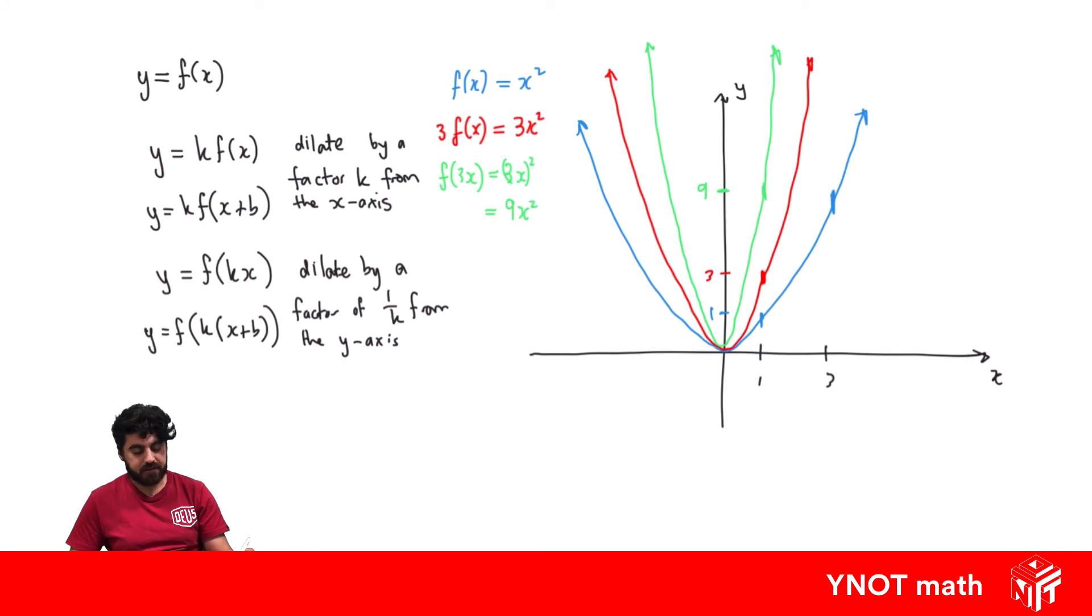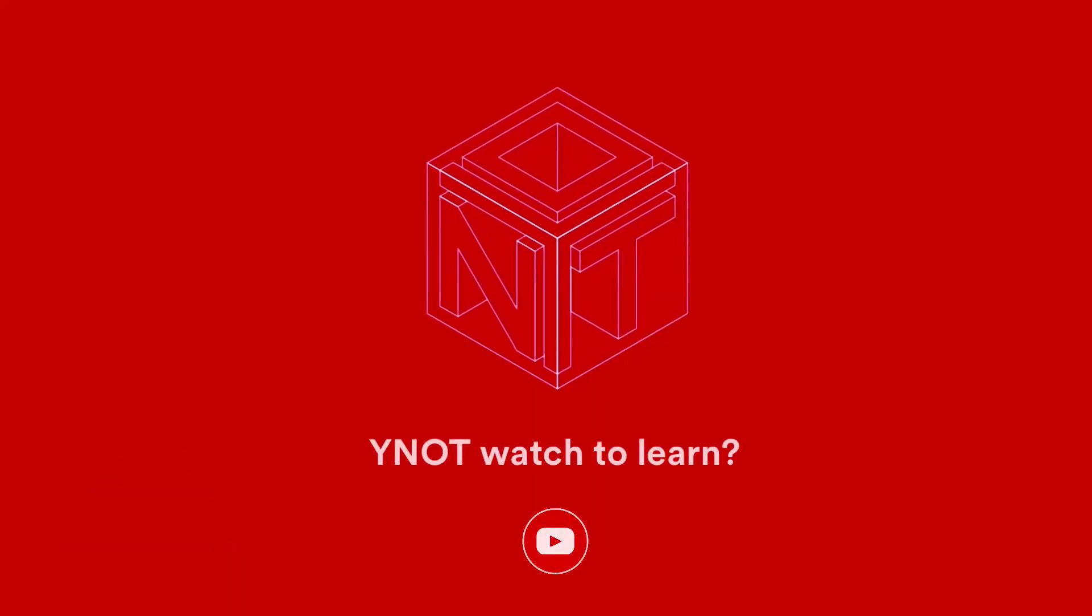What about our next dilation? We're talking about dilating by a factor of 1 over k from the y-axis. Our original function, when x was equal to 3, y was equal to 9. But now on our new function, when y equals 9, x actually equals 1. We've multiplied by a factor of 1 over 3 and got closer to the y-axis.